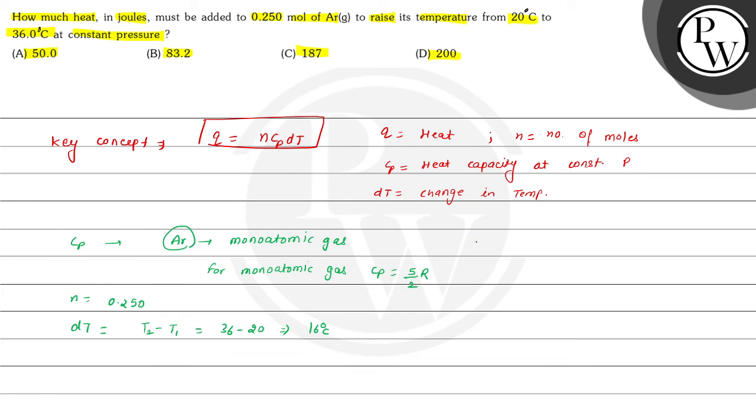Now, we can substitute the values in the formula, so Q equals 0.250 multiplied by Cp, that is 5/2 R. We have to find out the value in joules, so we will put the value of R as 8.314, multiplied by ΔT, that is 16. From here, the value of Q comes out to be 83.2 joules.